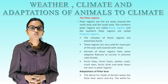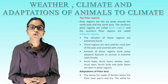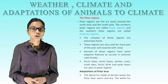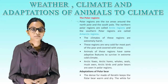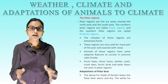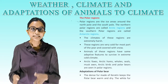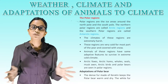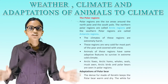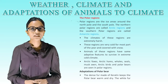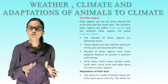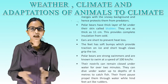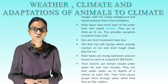These regions are very cold for most of the year and covered with snow. Animals of these regions have adaptive features to survive in the extreme cold climate. Arctic foxes, arctic hares, whales, seals, musk oxen, arctic birds and polar bears are seen in polar regions. Adaptations of polar bear: the dense fur keeps the polar bear warm and dry. The white fur merges with the snowy background and hence protects them from predators.